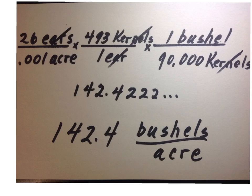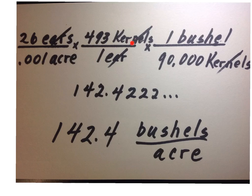Let's put it all together now. We'll set this up as a series of fractions, as we do for all unit conversions. Our first fraction shows that we had 26 ears in one one-thousandth of an acre. We multiply by 493 kernels per ear so that the ears cancel. We then multiply by 1 bushel per 90,000 kernels, set up so that the kernels cancel, leaving us with bushels on top and acres on the bottom, so our answer comes out in bushels per acre.